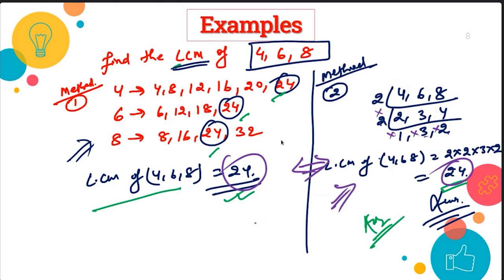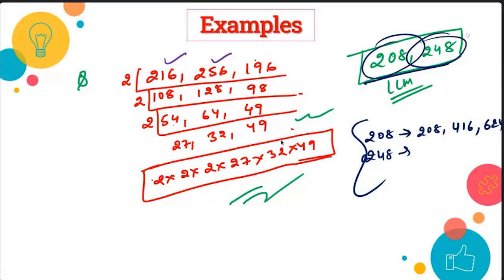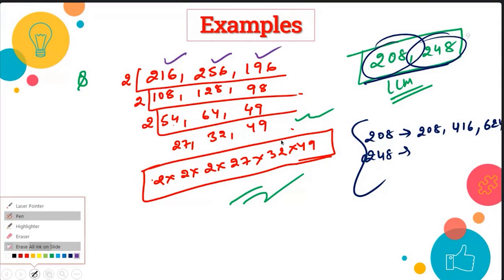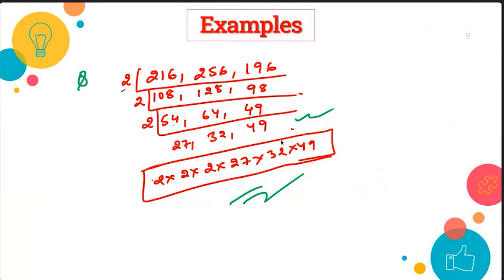Both methods give the same answer of 24, confirming both processes are correct. The multiple listing method works well when you already know the tables of small numbers like one to 20. But for large numbers like 216, 256, or 196, you need to use the division method. So we take two as the common divisor. Now dividing 216, 128, and 98 by two gives 108, 64, 49. Again dividing by two gives 54, 32, 49. Again: 27, 32, 49.